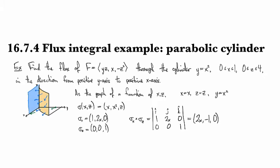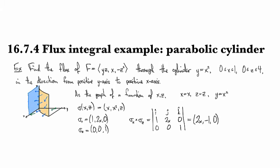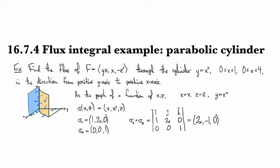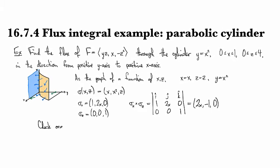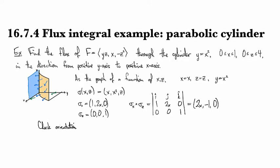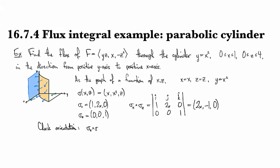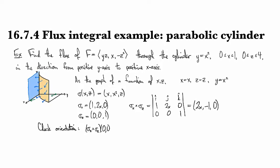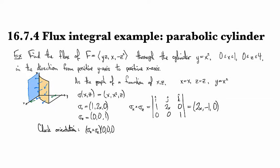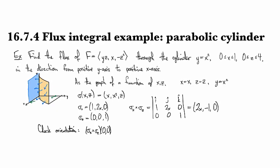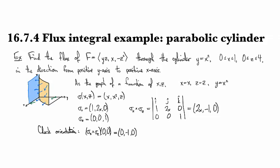So now I need to check the orientation here to make sure that it agrees with this particular parametrization. So I can go ahead and evaluate sigma x cross sigma z, and I'm going to evaluate it at zero, zero. And so when I evaluate that, what do I get? I get zero minus one zero.